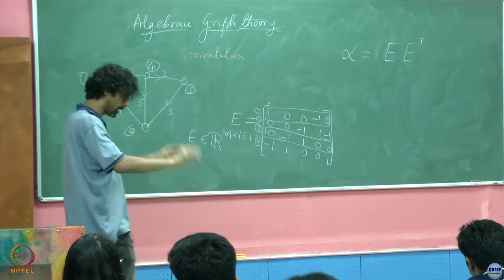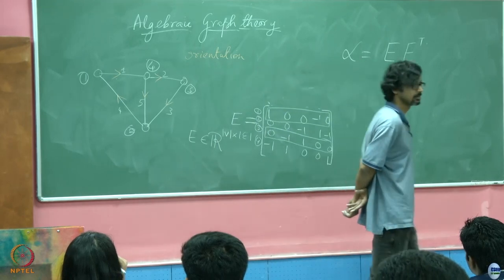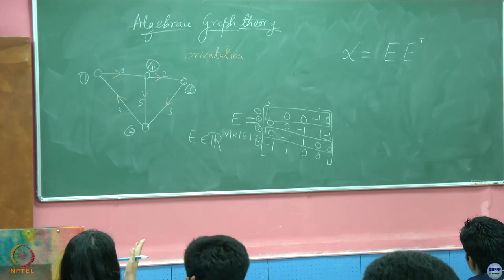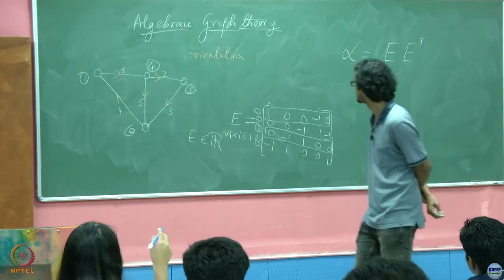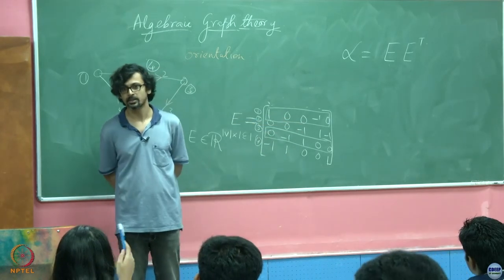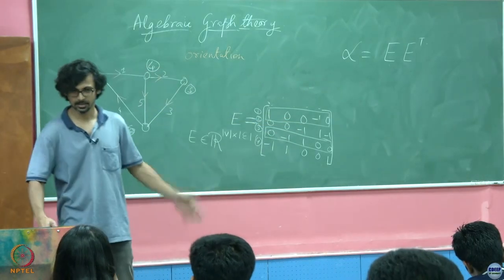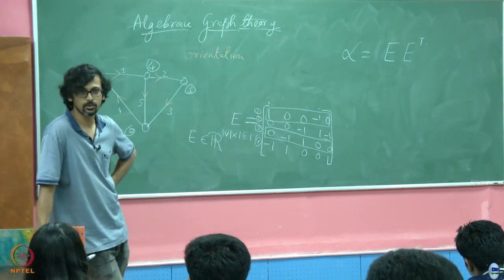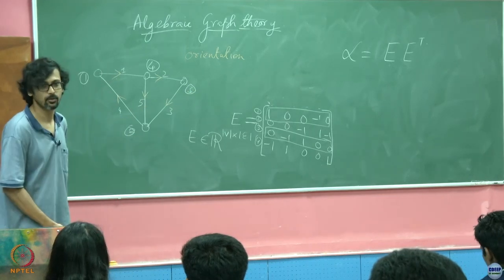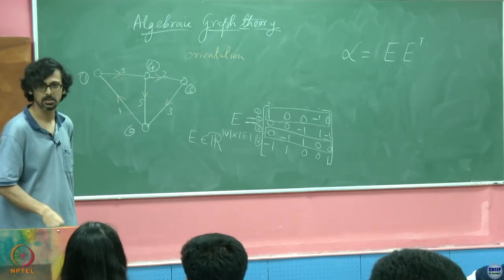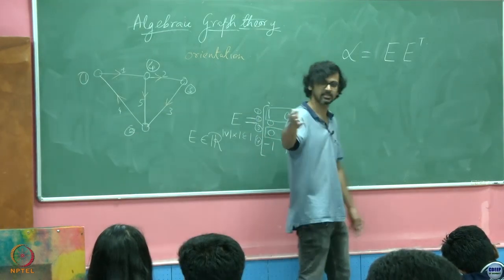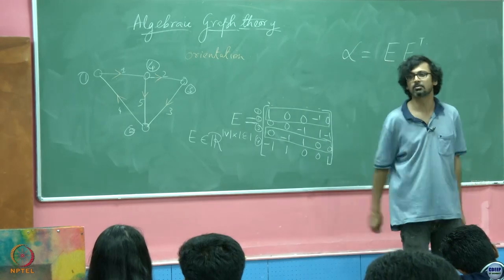Now, why should this Laplacian necessarily be singular? One straightforward way: the row sum of the Laplacian is always 0 — the determinant must be 0. That is a very legit proof of the fact that the Laplacian must be singular.